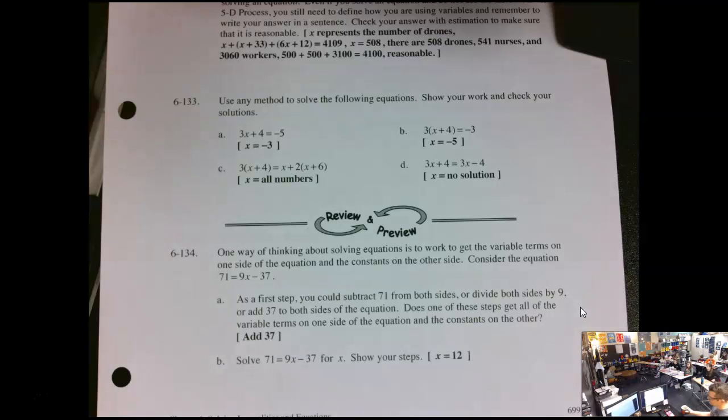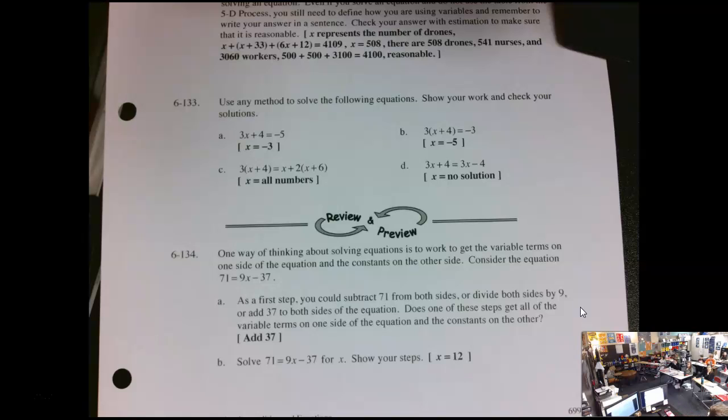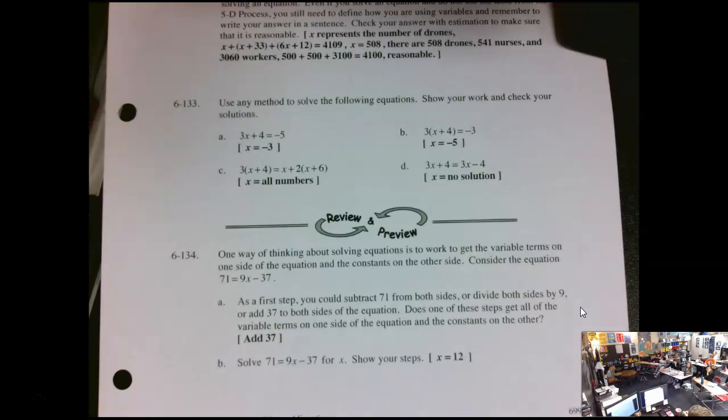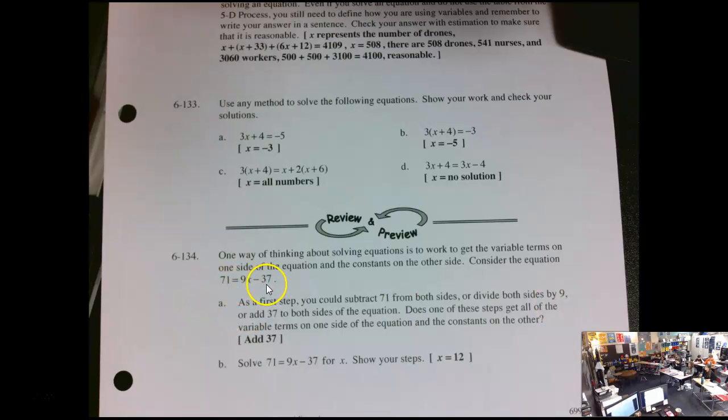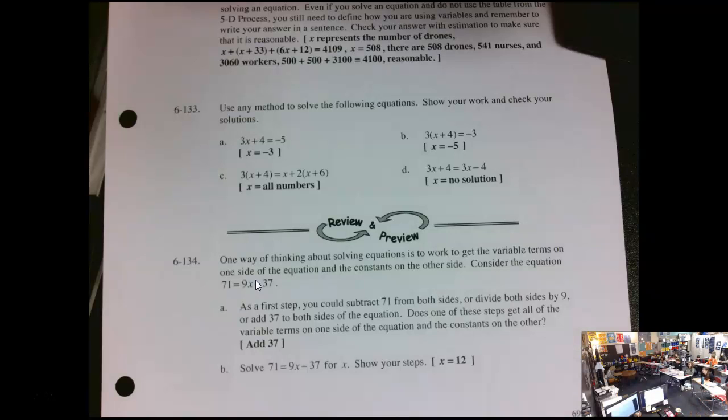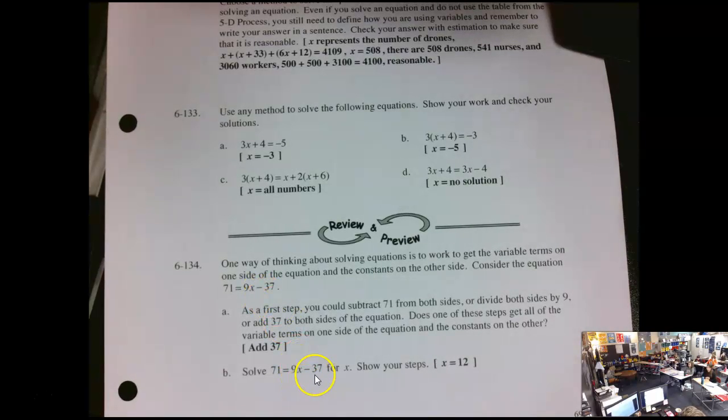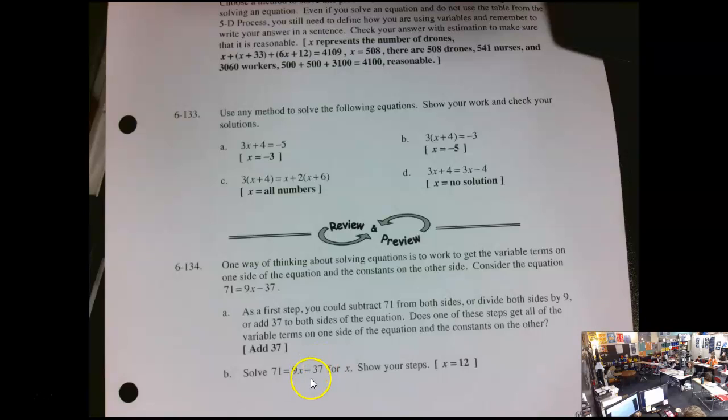So when we look at 134, this goes exactly back to what we did in class. Would dividing by 9 work for that equation? Who can talk about why or why not? Would dividing by 9 first? Araya? Because 71 and 37 both don't really divide by 9 nicely. So while we could, we don't, because it's messy, right? It's some gross, ugly numbers. So we would first start by adding 37 on both sides.